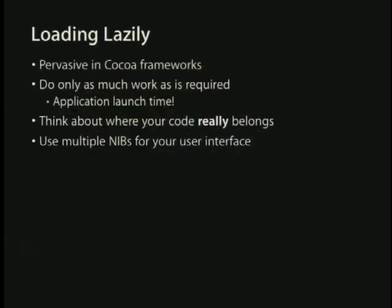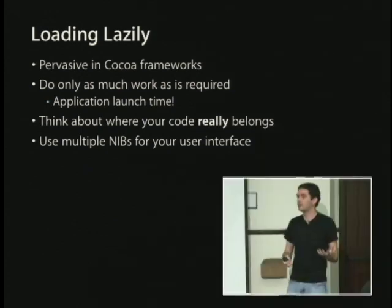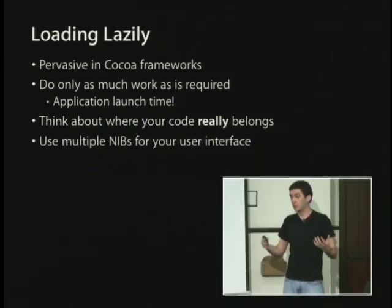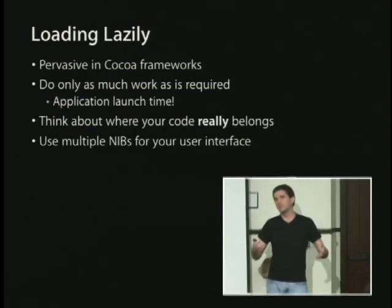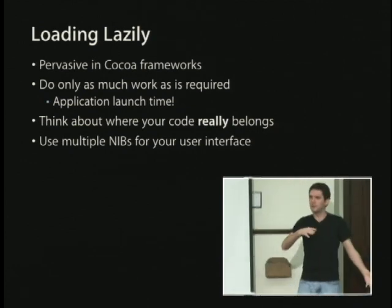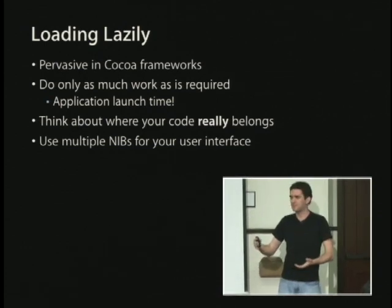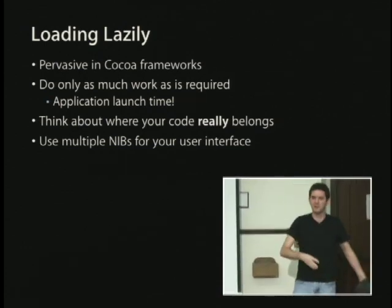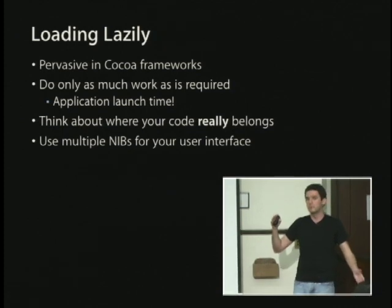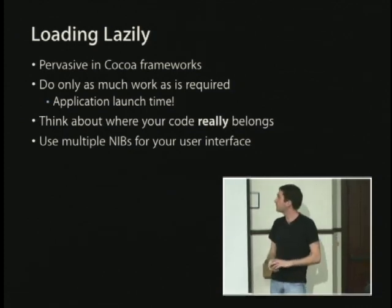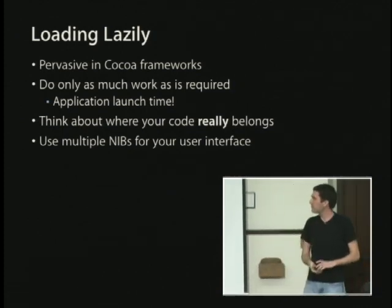The first thing to talk about is loading things lazily. It's pretty pervasive throughout the Cocoa frameworks, and a lot of the APIs encourage this behavior. UITableView, for example, doesn't ask you for all the rows up front — it only asks you for cells for the rows that are currently visible. You probably want to take advantage of that and not just load a ton of memory with big files off disk for all the rows in your table view. Just load the pieces when table view asks you for them.